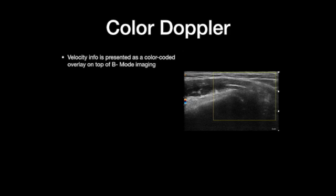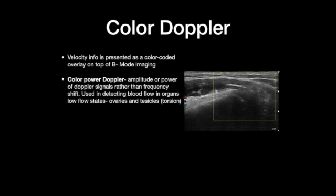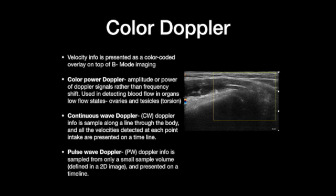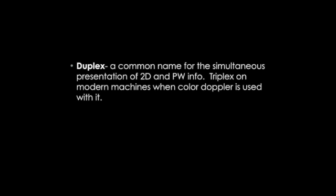Color Doppler presents velocity information as a color-coded overlay on top of B mode imaging. Color power Doppler uses the amplitude or power of Doppler signals rather than the frequency shift, and is used in detecting blood flow in organs of low flow states such as the ovaries and testicles — for evaluating testicular torsion, for example. Continuous wave Doppler samples information along a line through the body, presenting all velocities detected at each point on a timeline. Pulse wave Doppler samples from only a small sample volume defined in a two-dimensional image presented on a timeline. Duplex is the simultaneous presentation of two-dimensional and pulse-wave information; triplex adds color Doppler to that.